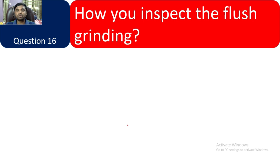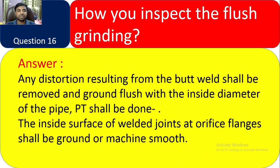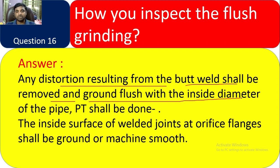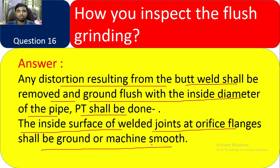Question 16: How do you inspect flash grinding? Any distortion resulting from the weld shall be removed and ground flush with the inside diameter of the pipe — PT shall always be done. The inside surface of the older joint and the orifice flanges shall be rounded or machine-smooth. This is the requirement for inspection of flash grinding.